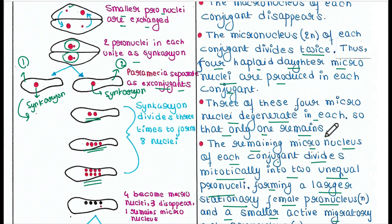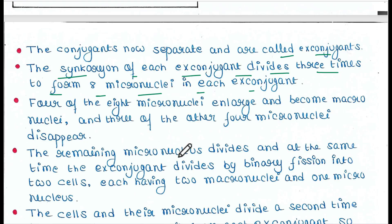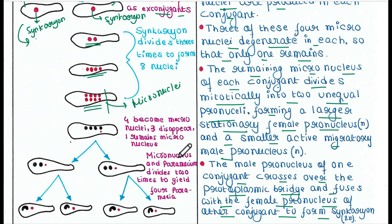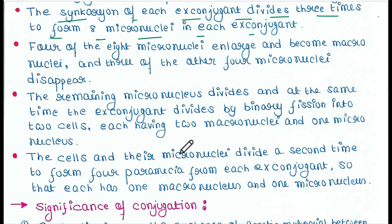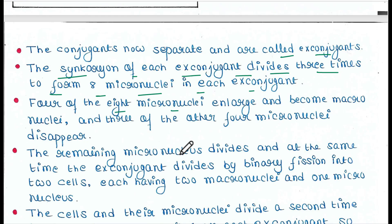These eight nuclei are all micronuclei. Among the eight micronuclei, four enlarge and become macronuclei, three disappear, and one remains as a micronucleus. So from eight micronuclei, four become macronuclei, three are destroyed, and one remains.